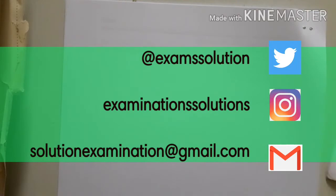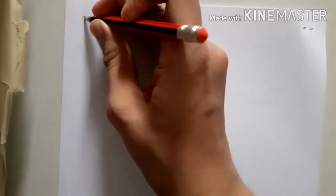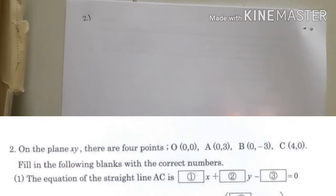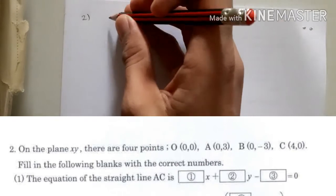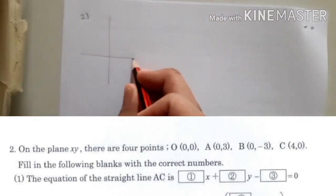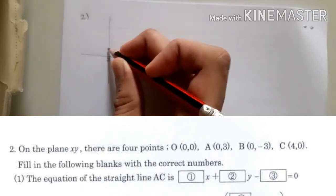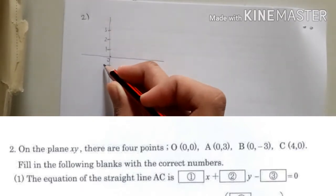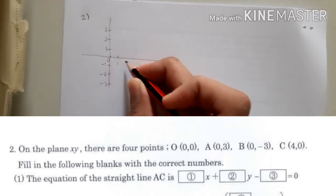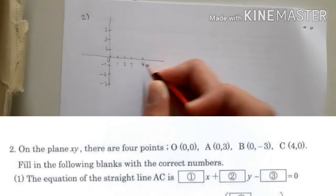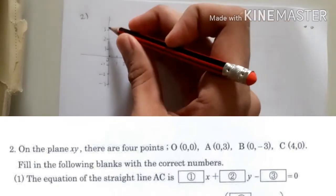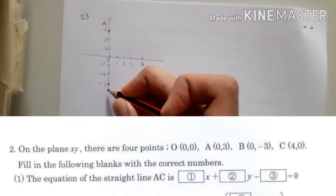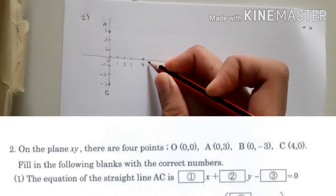Welcome to this Sensu Math 2015 Part 2. In Part 2, on the plane XY there are four points: O(0,0), A(0,3), B(0,3), and C(4,0). The best way to start is to draw the coordinate system with simple measurements and plot the points as the question asks. So there is point O at (0,0), point A at (0,3), point B at (0,3), and point C at (4,0).